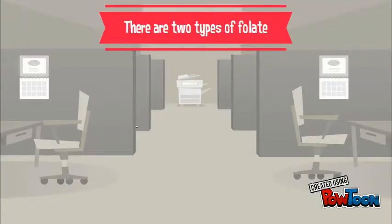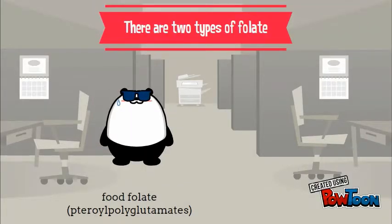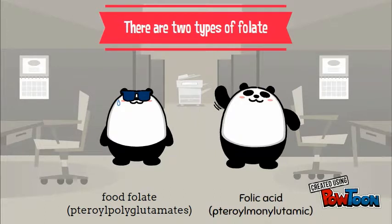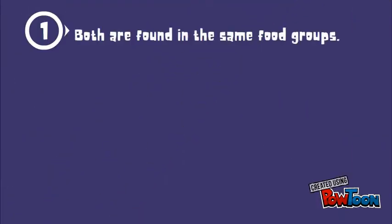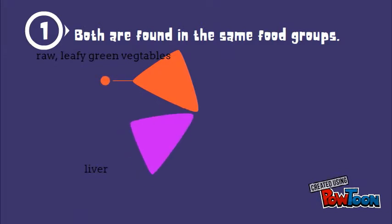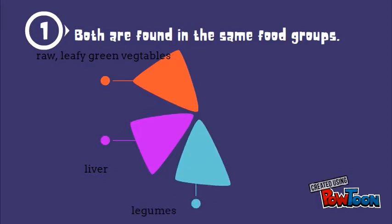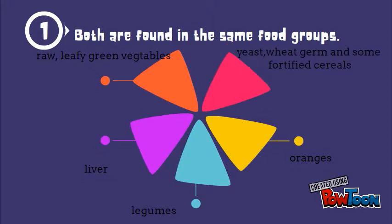There are two types of folate: food folate and folic acid. Both are found in the same food groups: raw leafy green vegetables, livers, legumes or beans, oranges, yeast, wheat germ, and some fortified cereals.